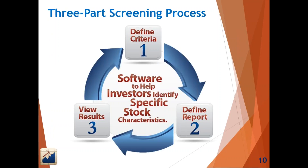Let's look at the process of building a screen — broken into three steps. The first is defining the criteria: what are you looking for? Are you looking for stocks growing sales and earnings at a particular rate, companies with a particular dividend yield, or companies in a particular industry or sector, or some combination of those fields?